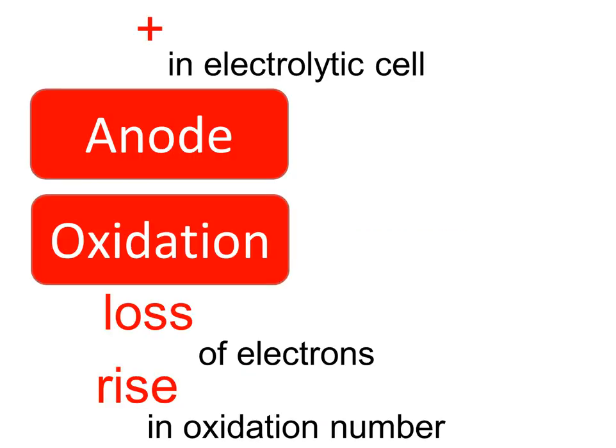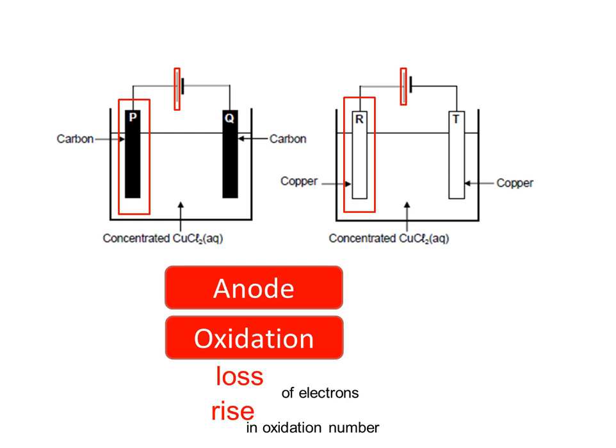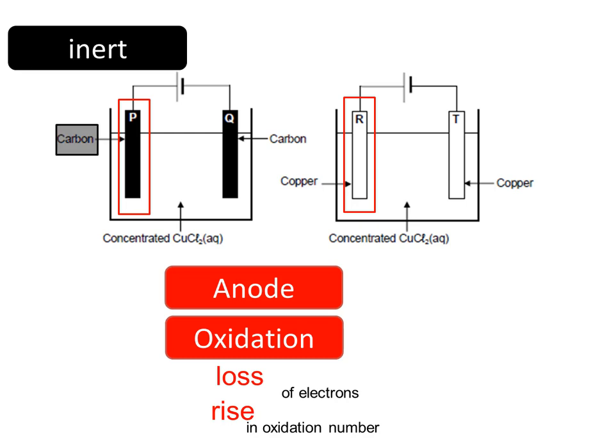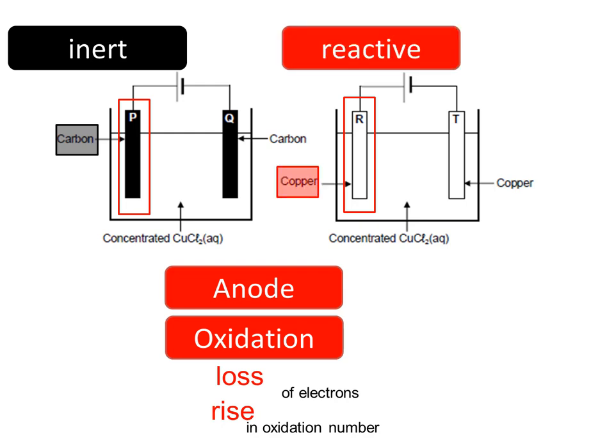In an electrolytic cell, the positive terminal is the anode where oxidation occurs — electrons are lost and oxidation number rises. The big difference between P and R is that carbon is inert, meaning it does not react. Because it's an electrical conductor, it conducts electricity allowing reactions to occur, but it doesn't actually participate in the reaction. On the other hand, copper is reactive, so R will participate in the reaction.